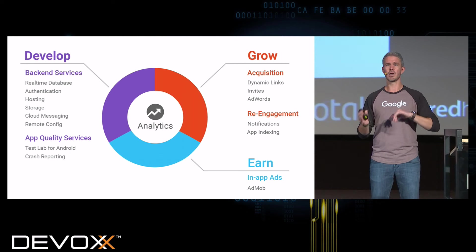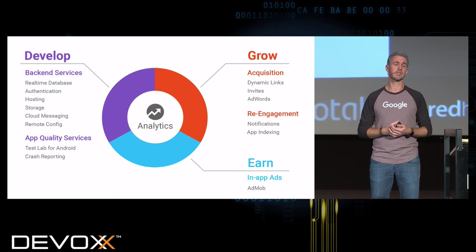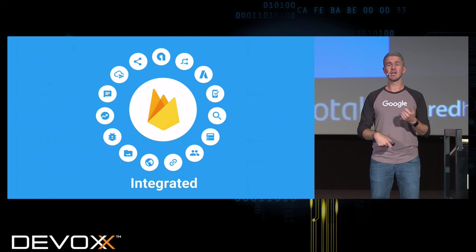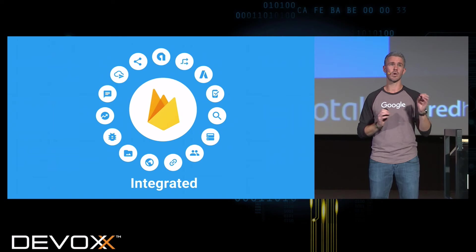At the center of all this is Firebase Analytics, which collects data on all these different features so you can monitor it, do reporting, and improve your application experience. These features are integrated and work really well together, but you don't have to use all of them — you can pick and choose what works for your application, whether it's web, mobile, or iOS.